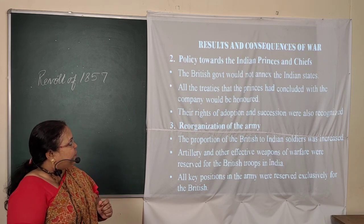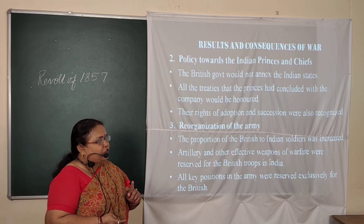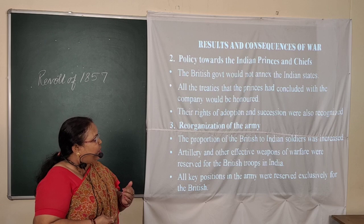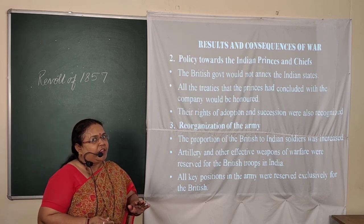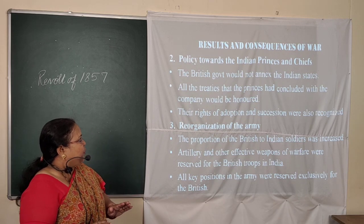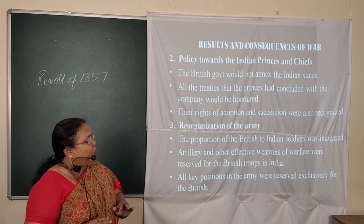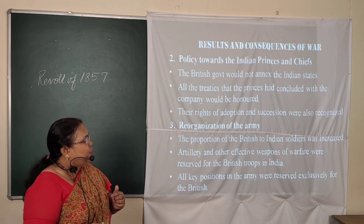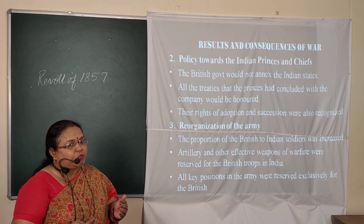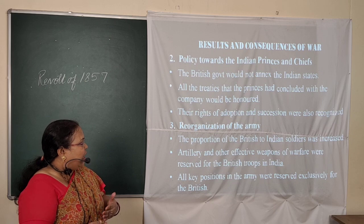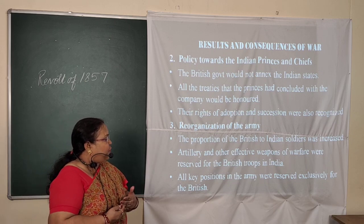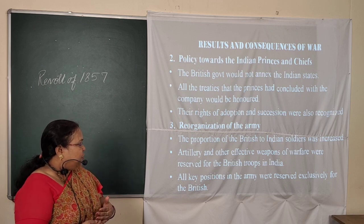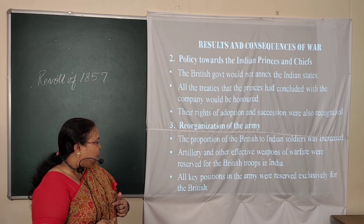Regarding policy towards Indian princes and chiefs, the British government stated it would not annex Indian states. All treaties that the princes had concluded with the company would be honoured by the Crown. Their rights of adoption and succession were also recognised. Then came the reorganisation of the army — the proportion of British to Indian soldiers was increased, artillery and effective weapons were reserved for British troops, and all key positions in the army were reserved exclusively for the British.